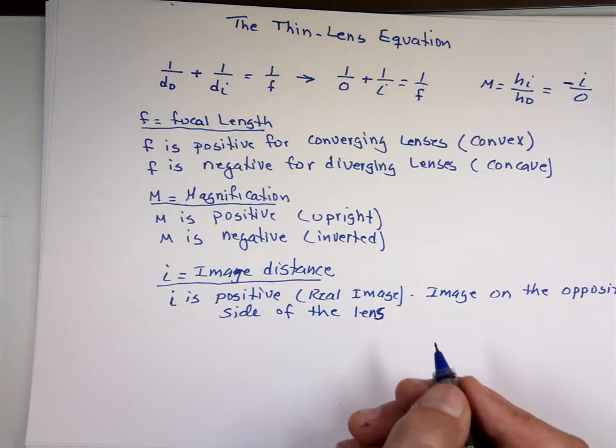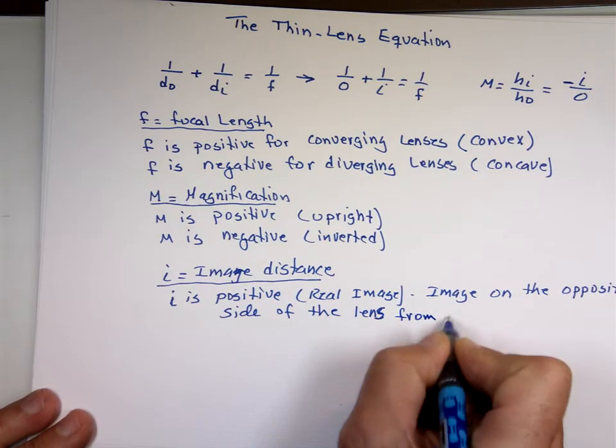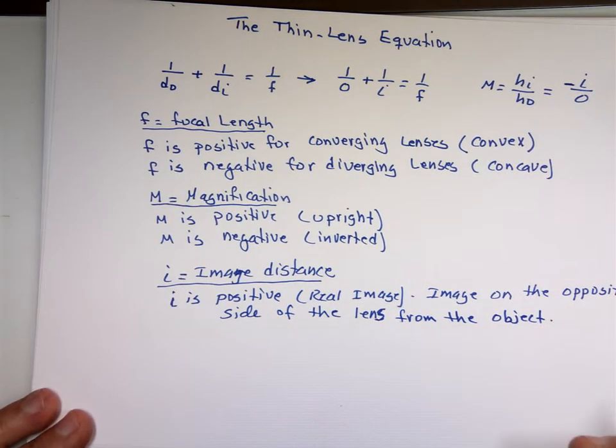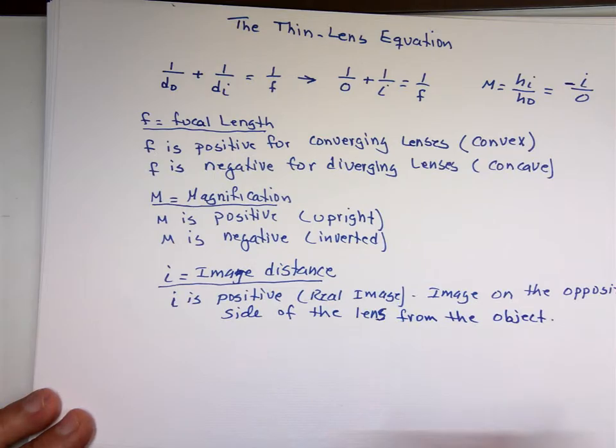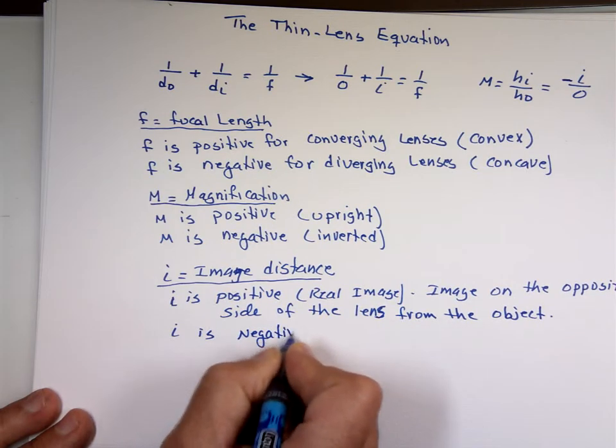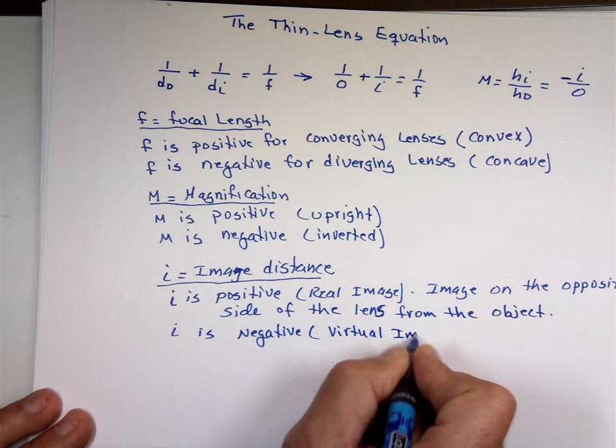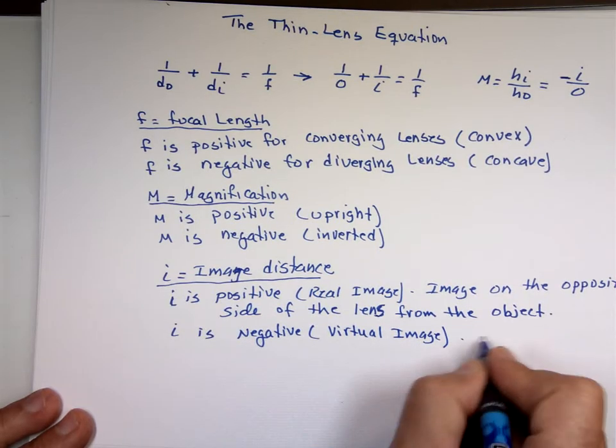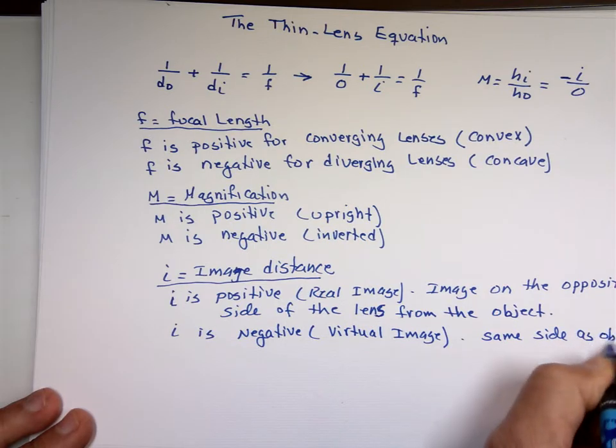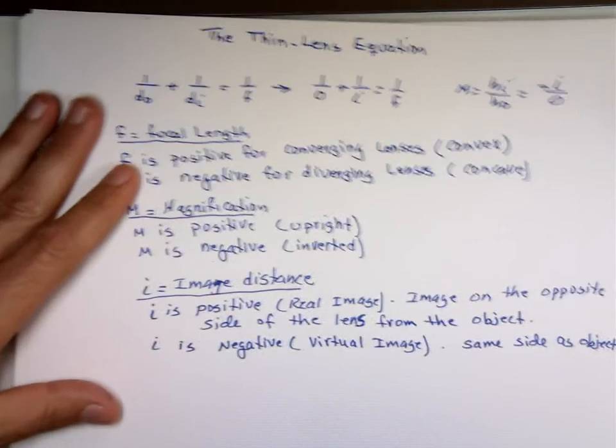Image on the opposite side of the lens from the object. The object on the left, the image on the right. The object on the right, the image on the left. But i is negative, that means virtual image. That's the same side, same side as object. So your object and your image are on the same side of the lens. That's the negative image.